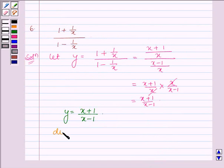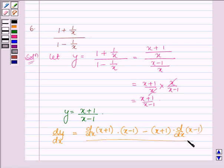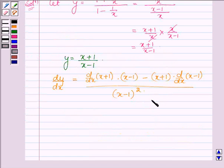Now, let us find derivative of Y that is DY upon DX. So we have DDX of X plus 1 into X minus 1 minus X plus 1 into derivative of X minus 1 upon X minus 1 whole square. And this is by the quotient rule, which we have done in earlier equation also.